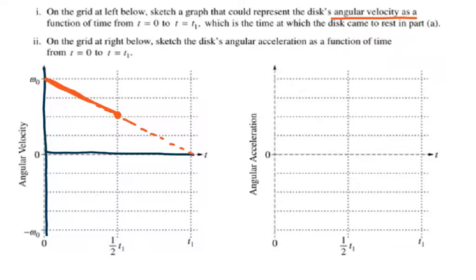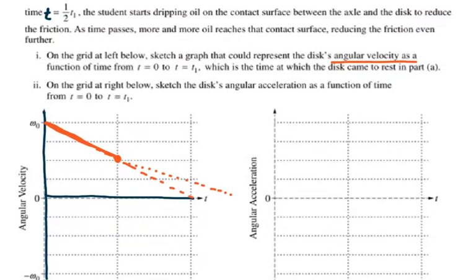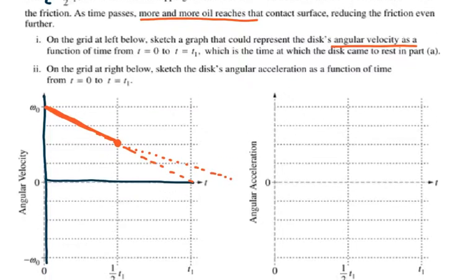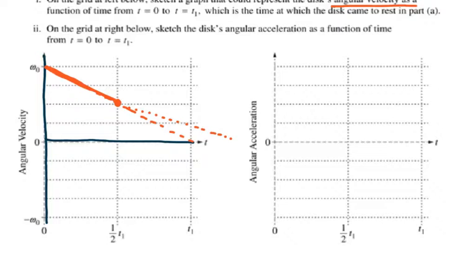But then after that, it will start, and it's not linear after that, so I cannot say it's gonna be just longer this way. Because they say that more and more oil reaches the contact between the disc and the rod. So that means the graph is not gonna look like this. The graph is gonna look like something like that. But they don't give me that much space. So I have to change my graph into something that is gonna look like this, and eventually stop.